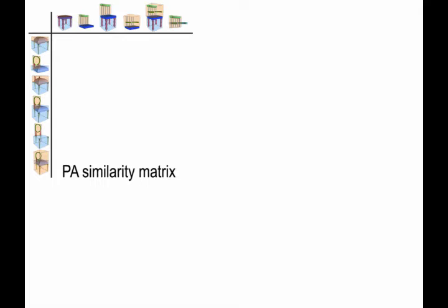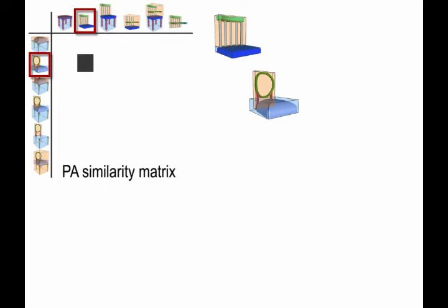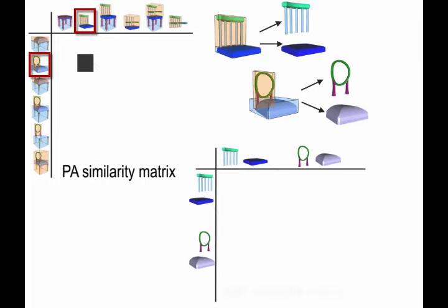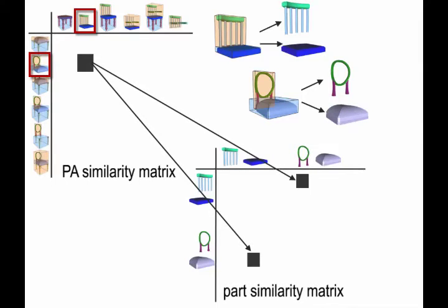Given this similarity matrix, we vote for the similarity of parts. Essentially, each pair of PAs contributes its similarity to the correspondence score of the parts involved in it, and in this way we form the parts similarity matrix.